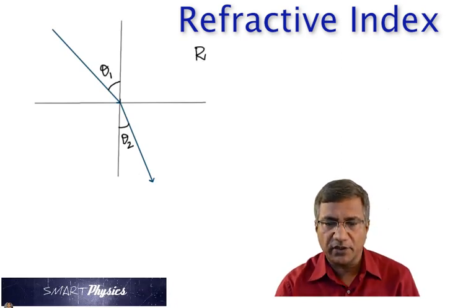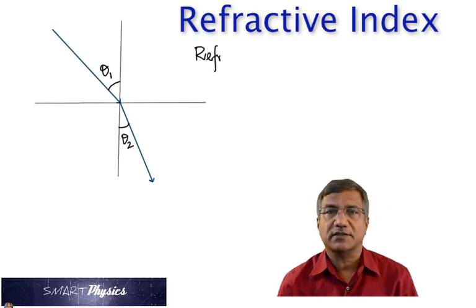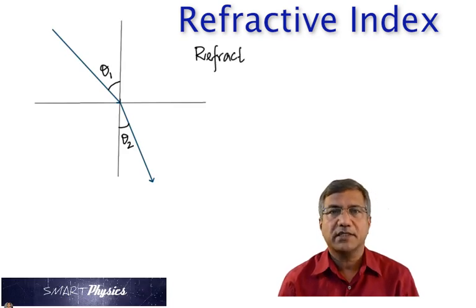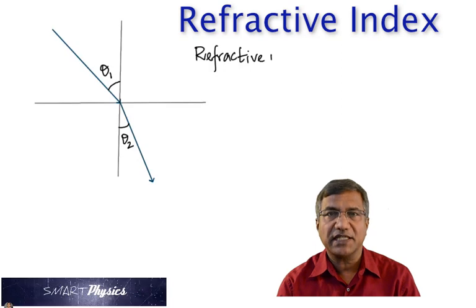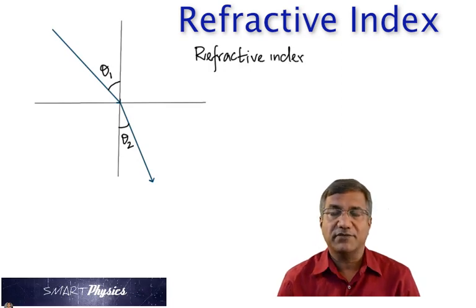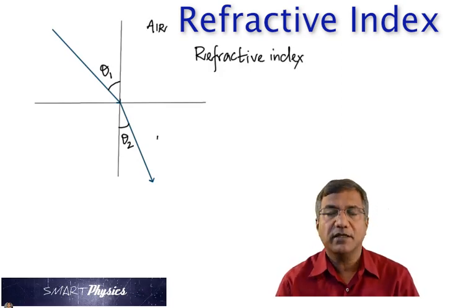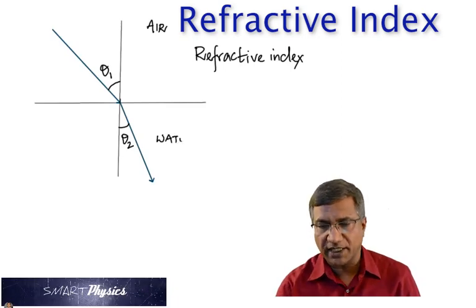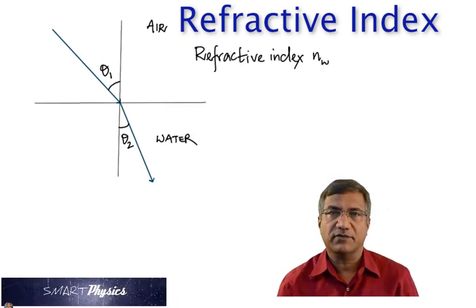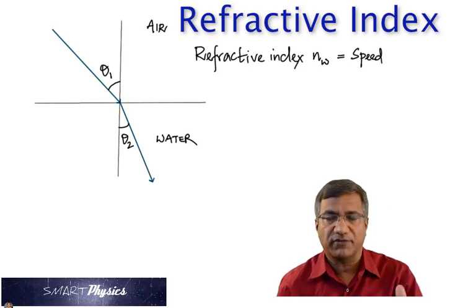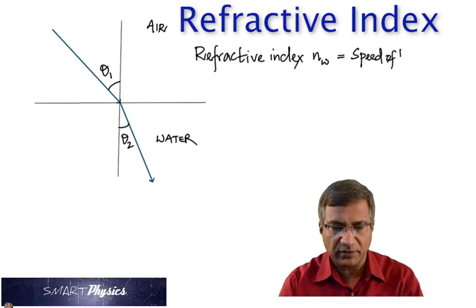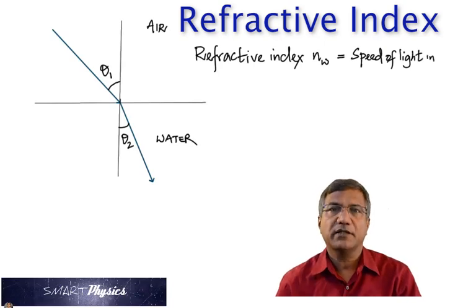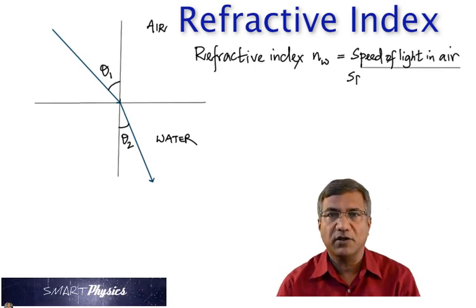And the refractive index is defined as the speed of light in air divided by the speed of light in water. So that's the definition of refractive index. Refractive index is the speed of light in air divided by the speed of light in water.